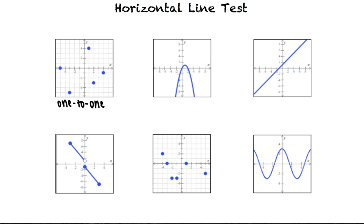For example, the line y equals negative 2. This means the function is not 1 to 1. The third function passes the horizontal line test because we can't draw a horizontal line that intersects the graph at more than one point. So this function is 1 to 1.